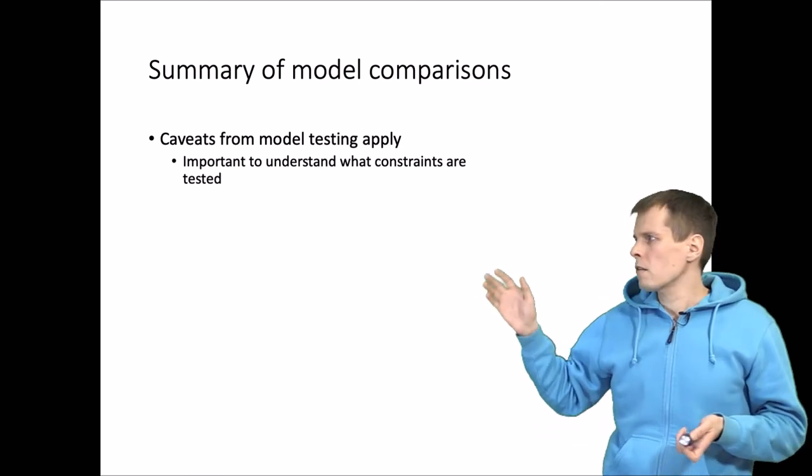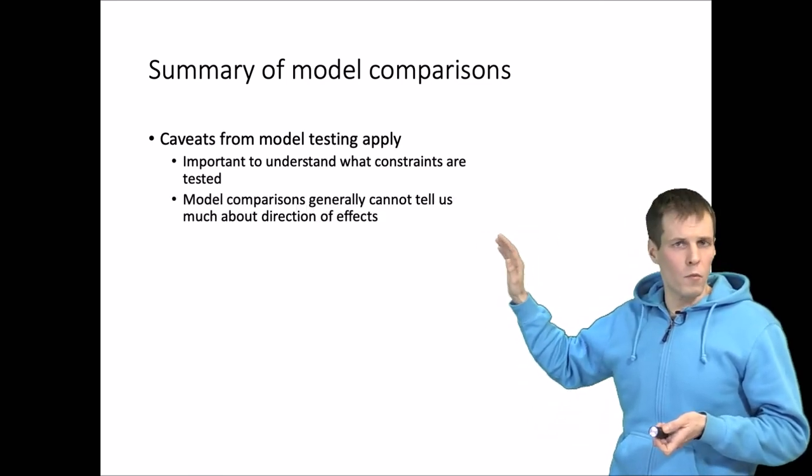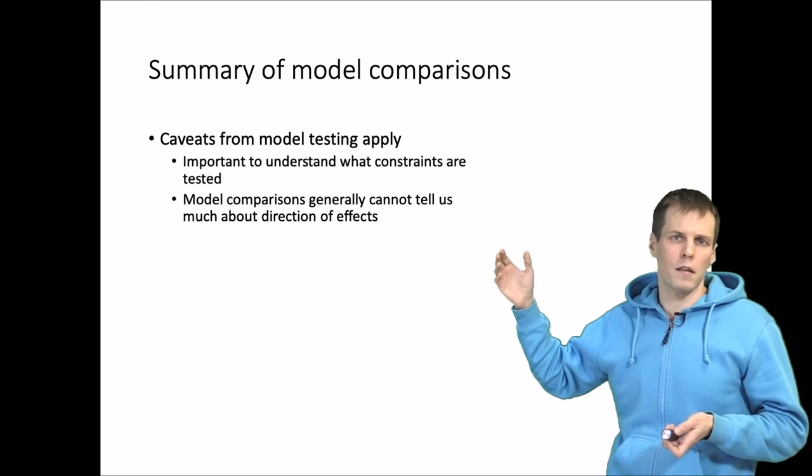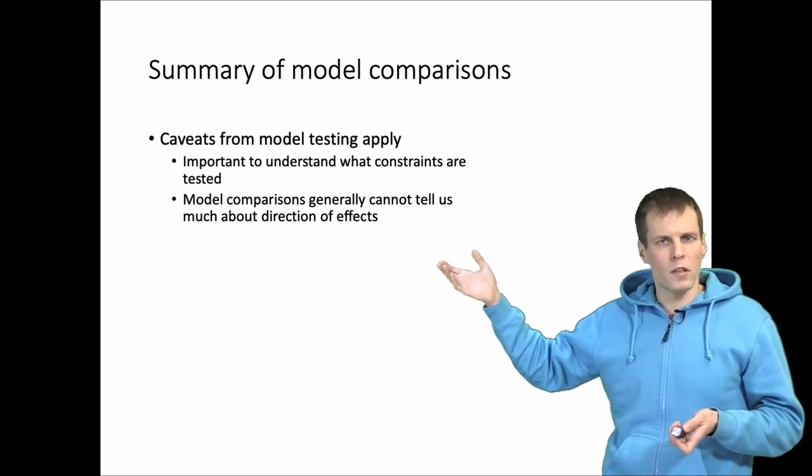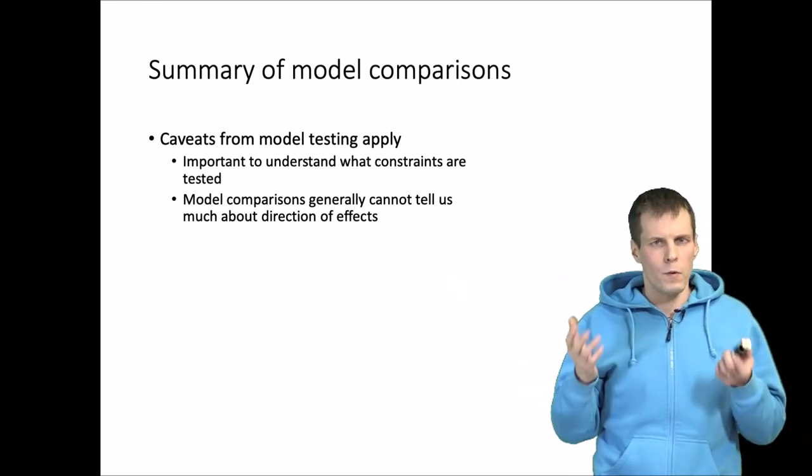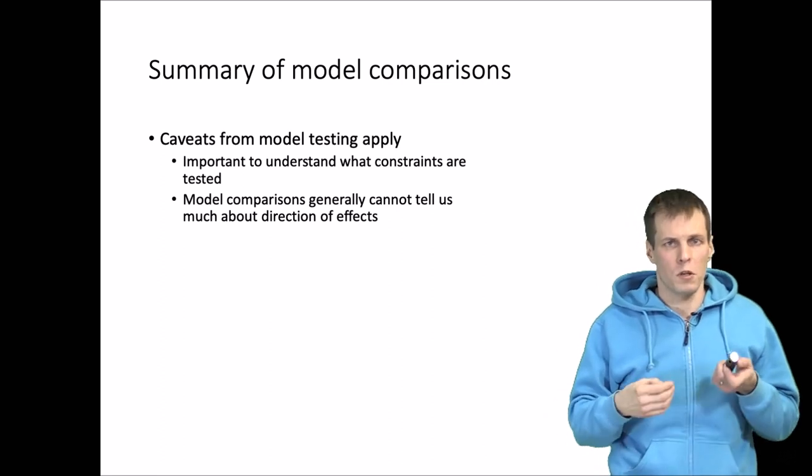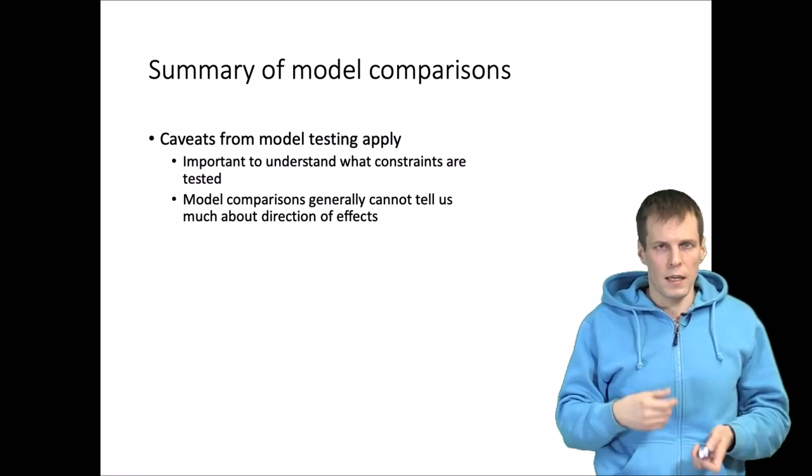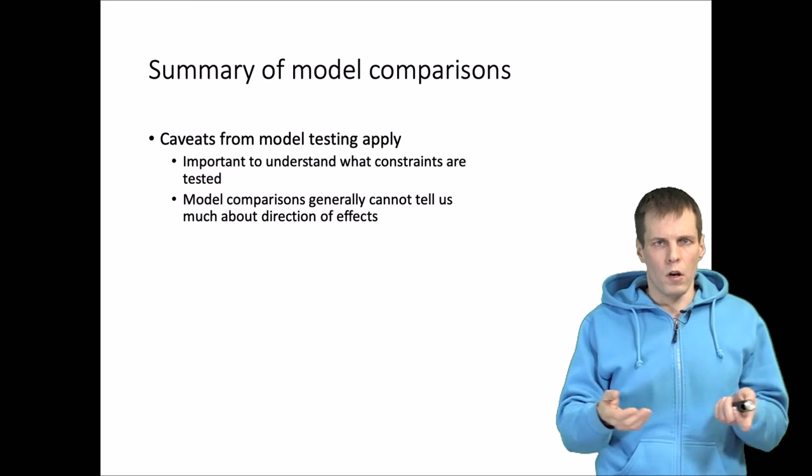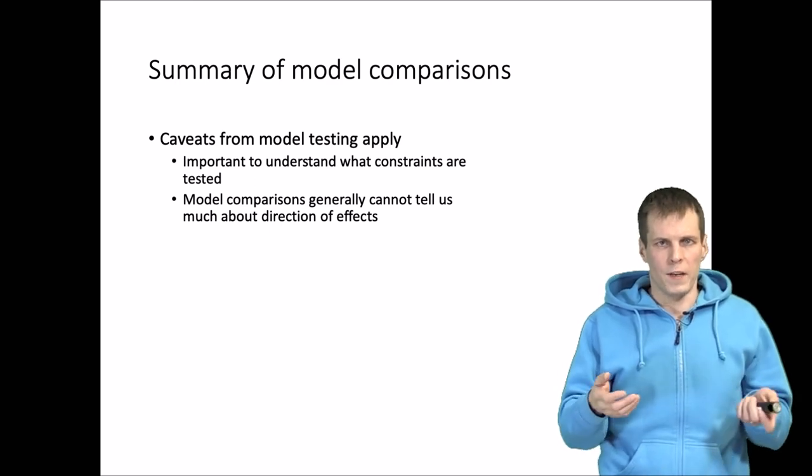The second thing you need to understand is that model tests and model comparisons neither can tell us pretty much anything about the direction of influence. If you want to establish direction, you need to consider that in your research design. That is pretty much beyond what covariance model fitting can tell us.